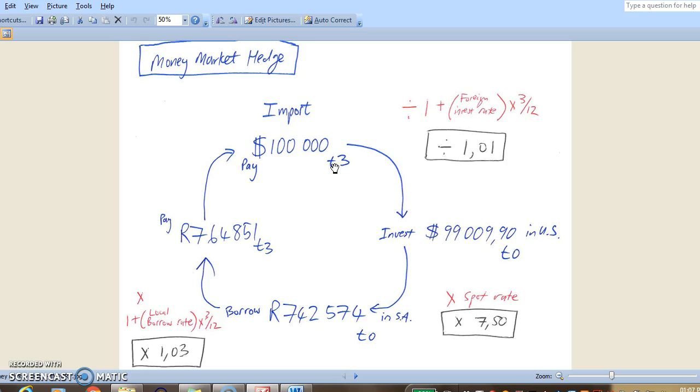So how do you hedge yourself against this? Well, in order to have $100,000 US dollars in 3 months time because that's what we will need to pay, we could go and invest a certain amount now in the US and earn the 4% in the United States.